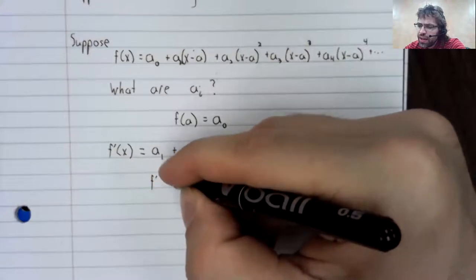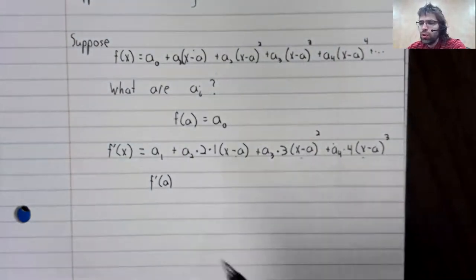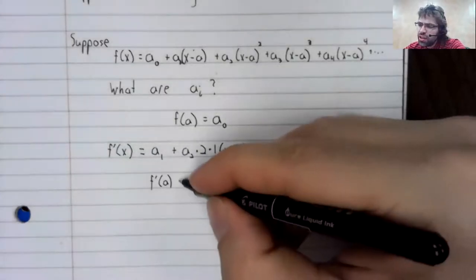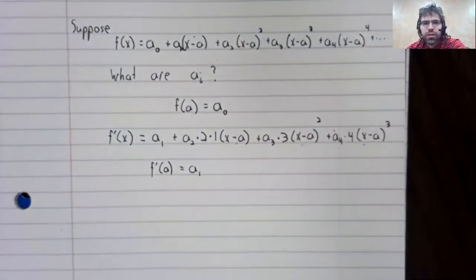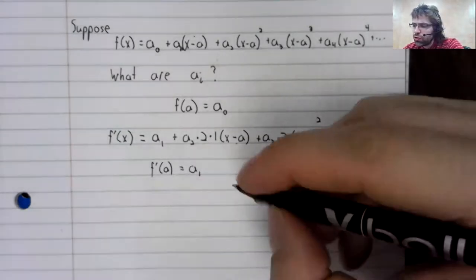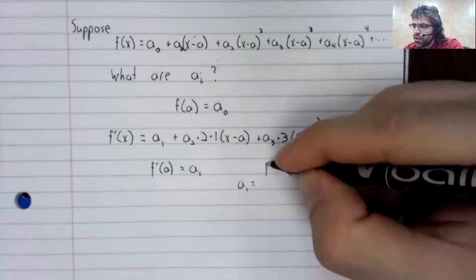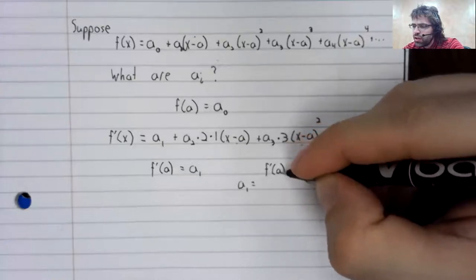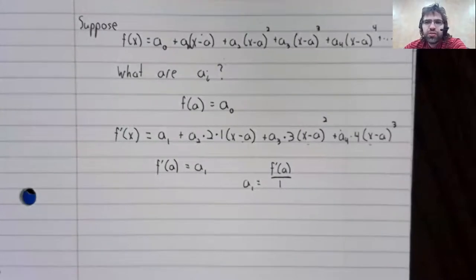And now we'll repeat the trick we used here. If we stick a into this, these terms all turn to zero. The only thing that survives is this a sub one. So a sub one equals the derivative. Let me write that a sub one is the derivative divided by one. We certainly can write that if we want to,